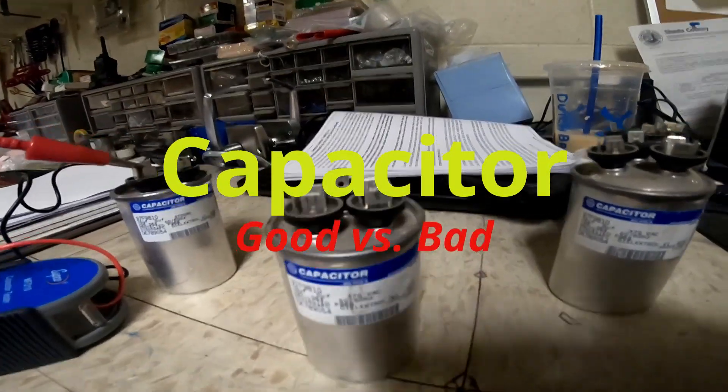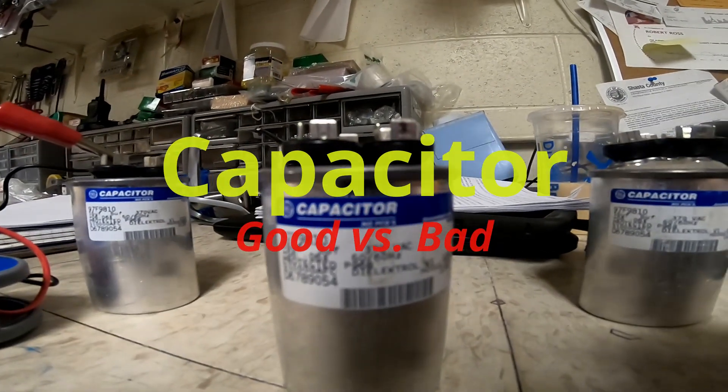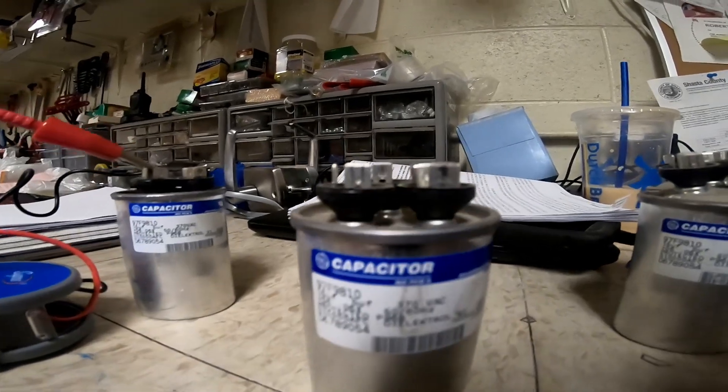So this is a capacitor, and as you can see, the top is flat. That's how it's supposed to be.